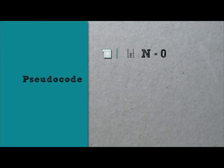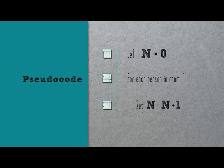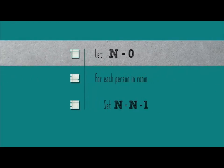Let n equal zero. For each person in room, set n equal to n plus one. How to interpret this pseudocode? Line one declares a variable called n and initializes its value to zero. This just means that at the beginning of our algorithm, the thing with which we're counting has a value of zero. Before we start counting, we haven't counted anything yet.